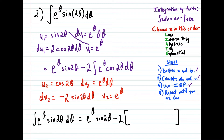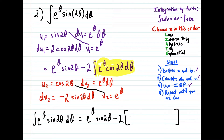And so far, this is equal to e to the θ sine 2θ, minus 2 times — and then this is where we're going to leave the space — because minus 2 times all this stuff in red was to help us evaluate this particular integral. So this part here is where we're applying integration by parts again. Now we use the formula: this integral is equal to u times v, so we're multiplying e to the θ times cosine 2θ.